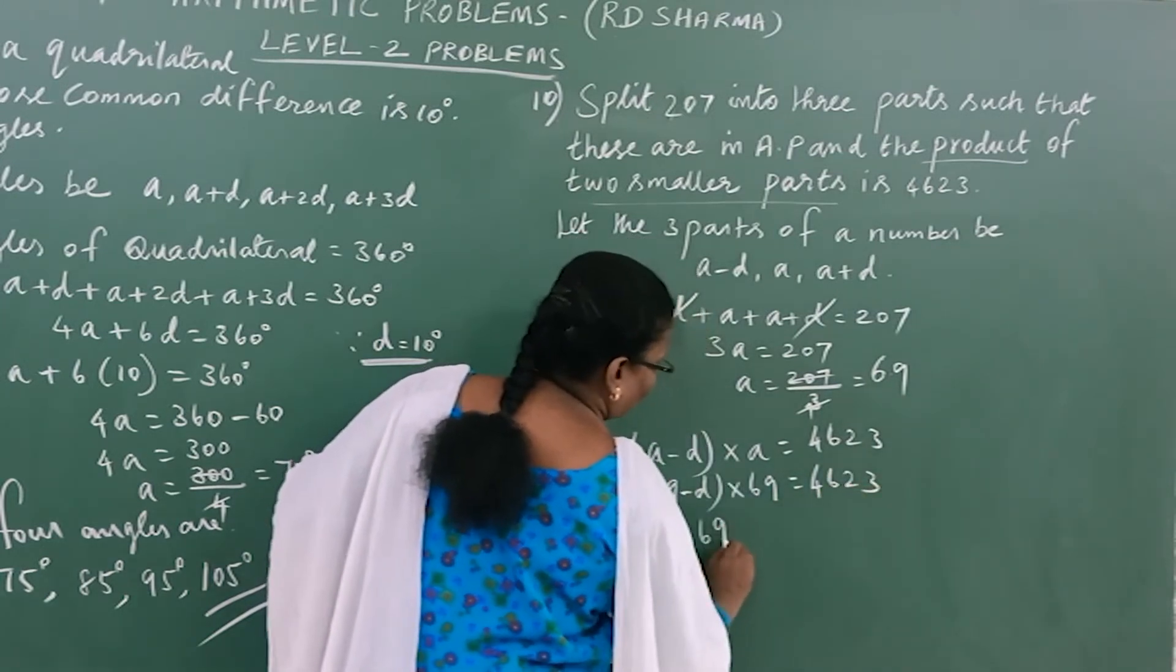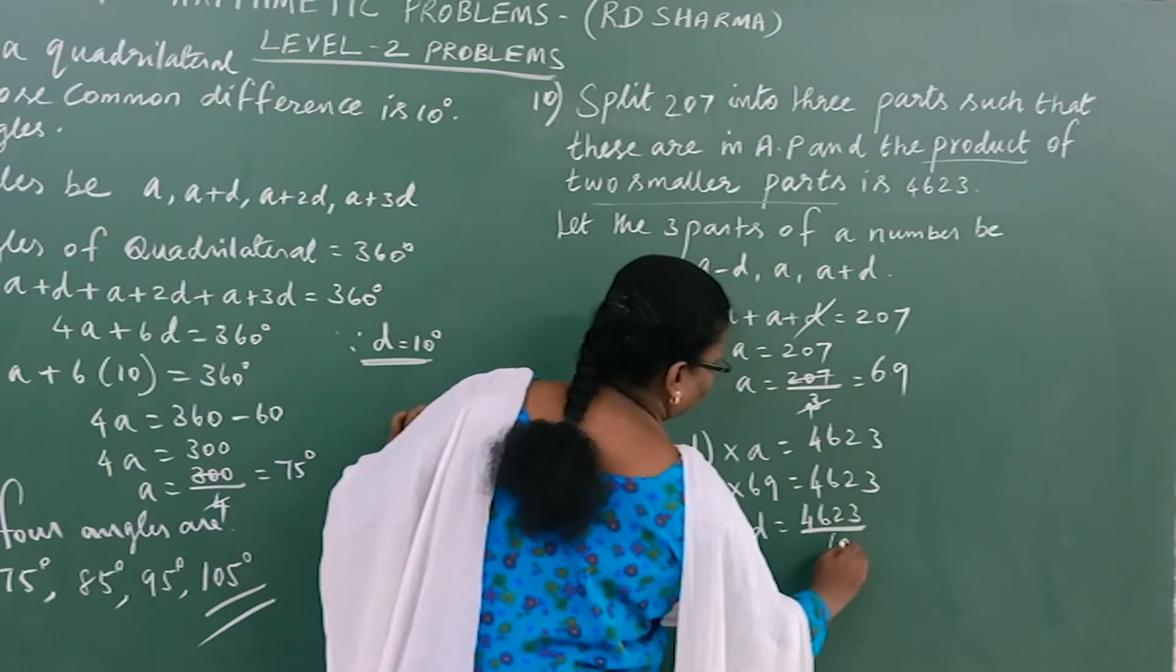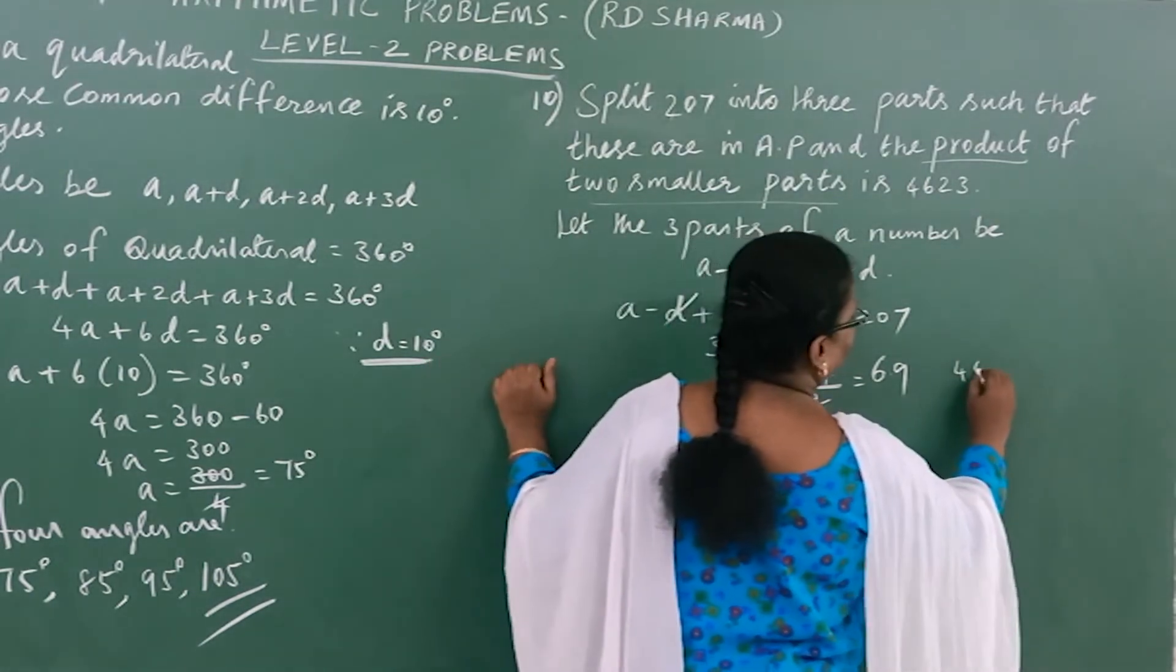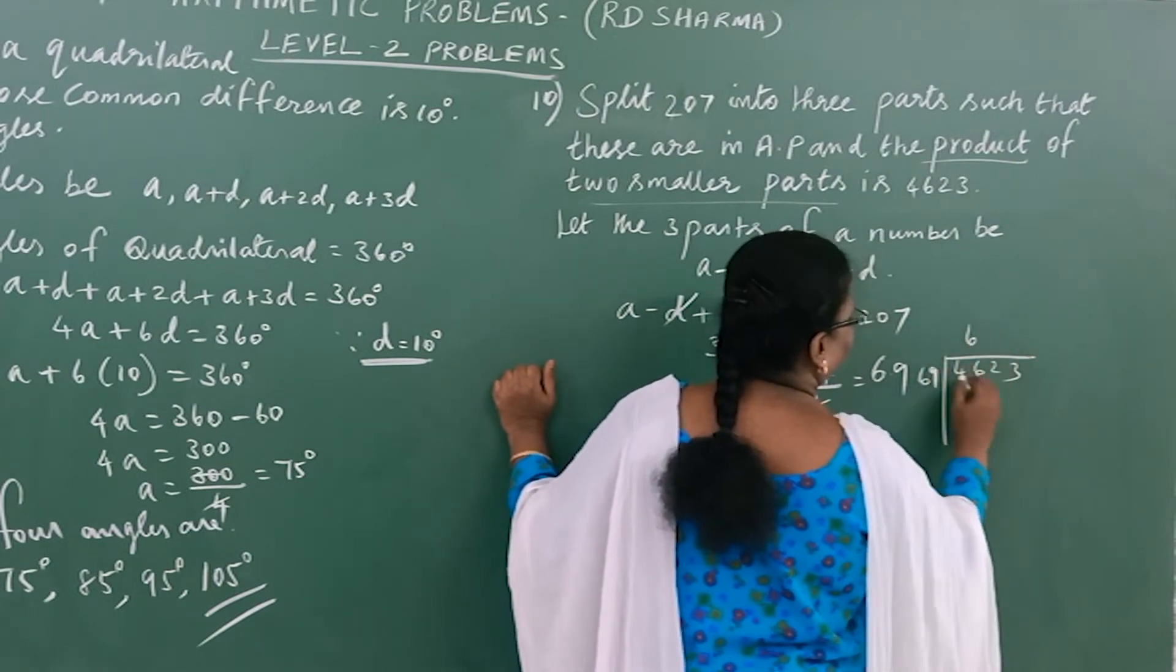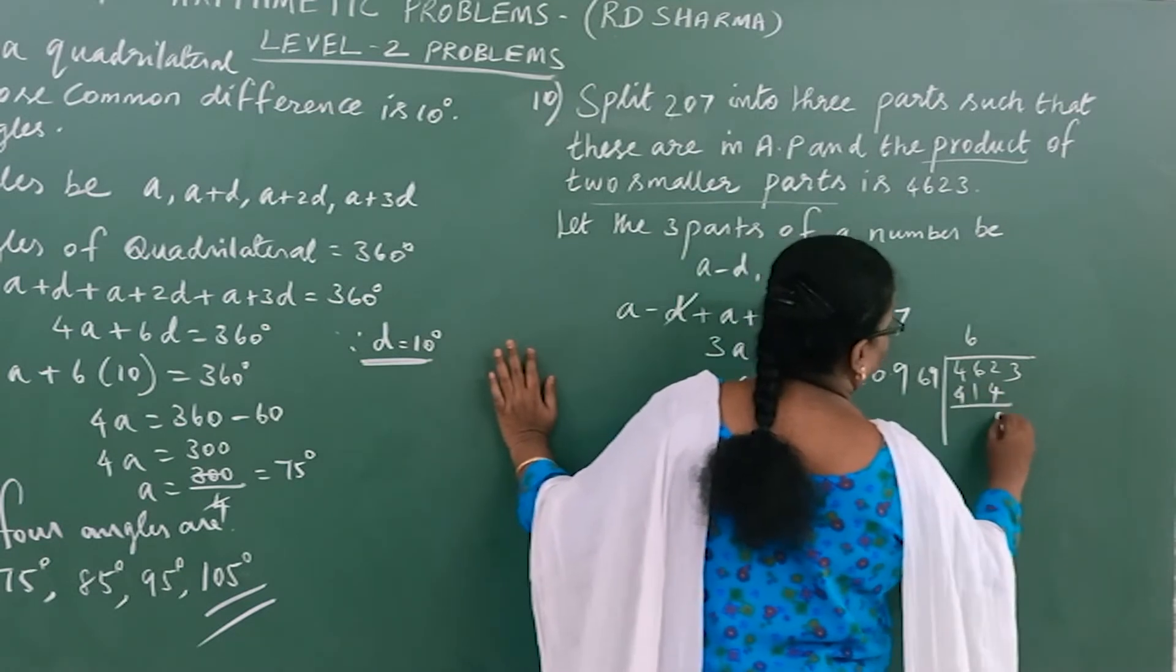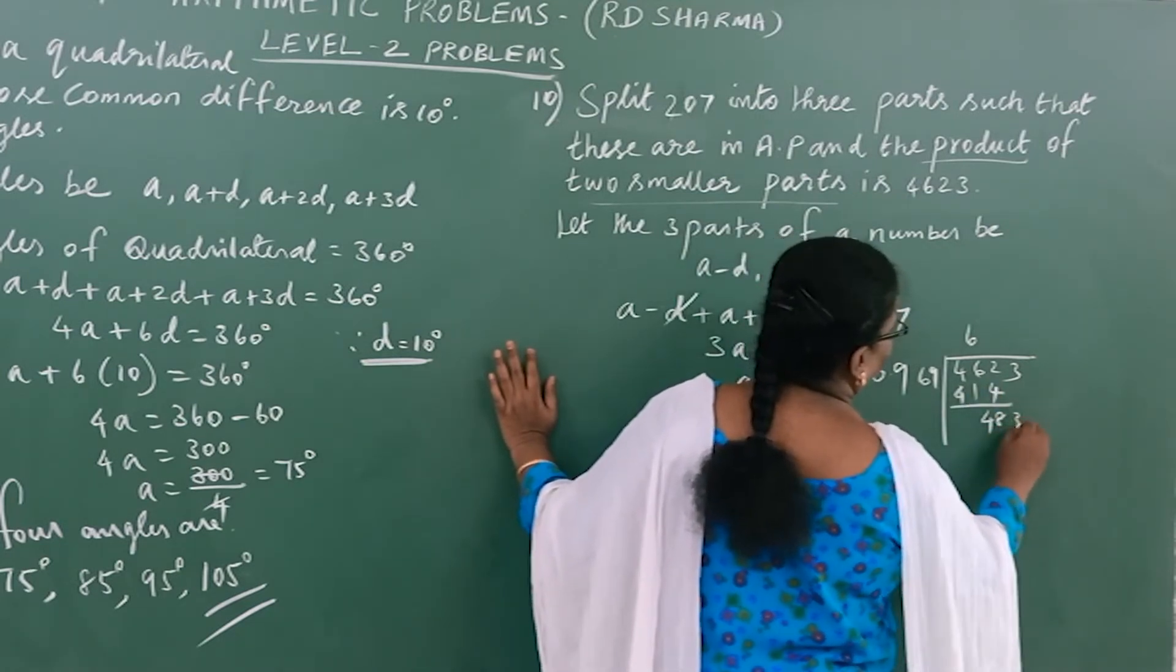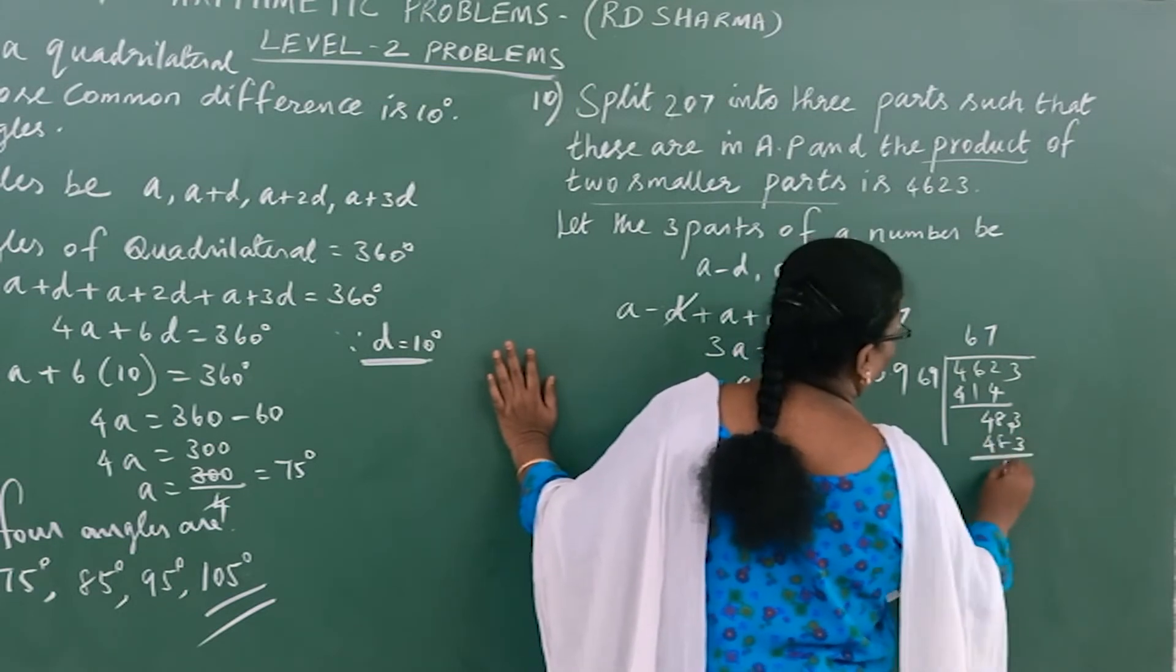So 69-D = 4623÷69. Dividing 4623 by 69: 6 times 69 is 414, remainder is 483. Continue dividing to get 67.